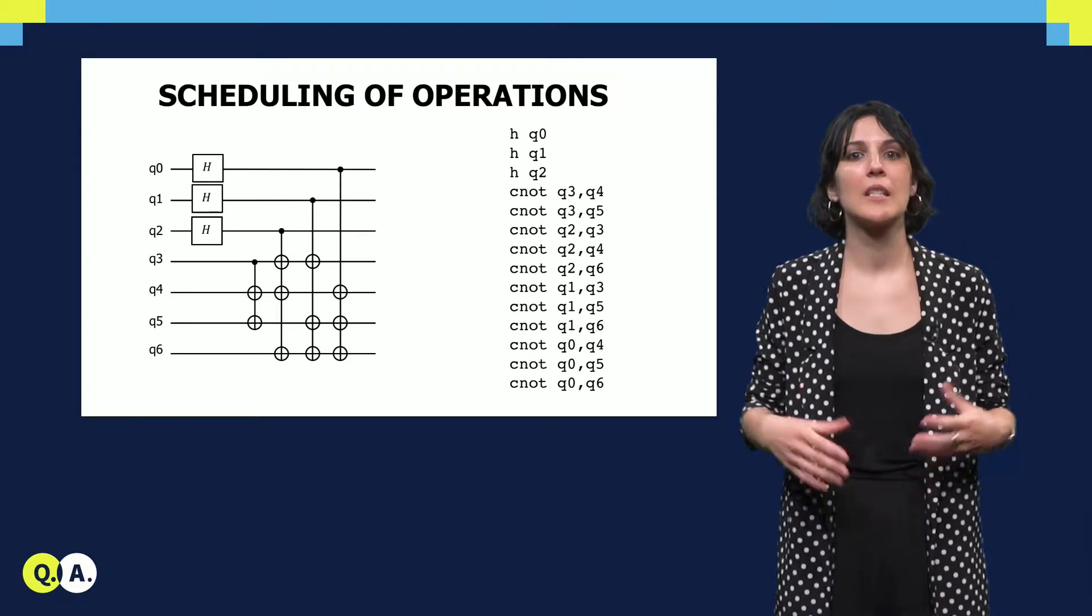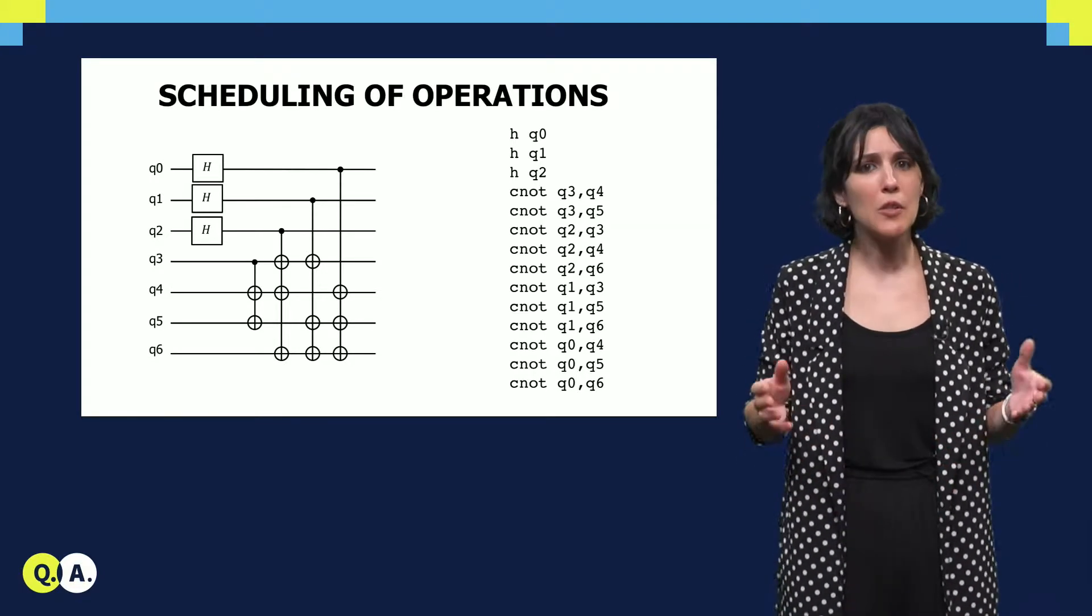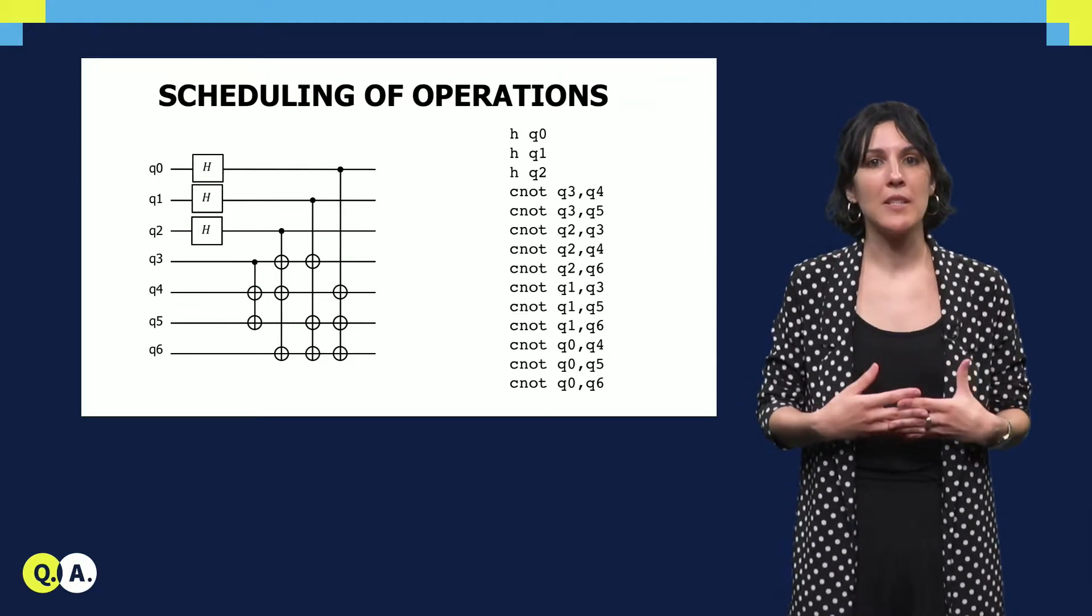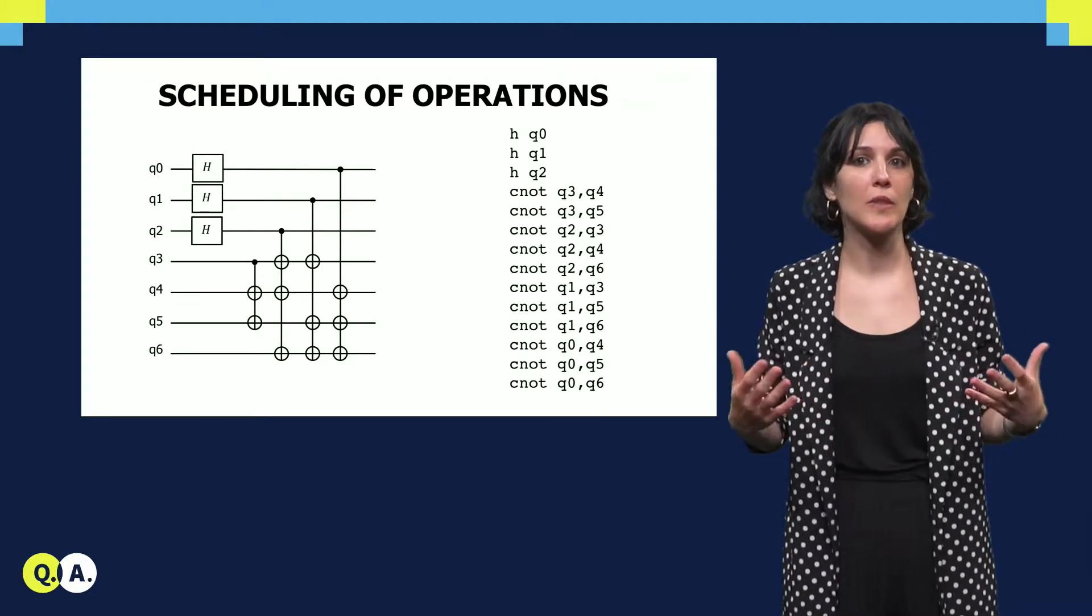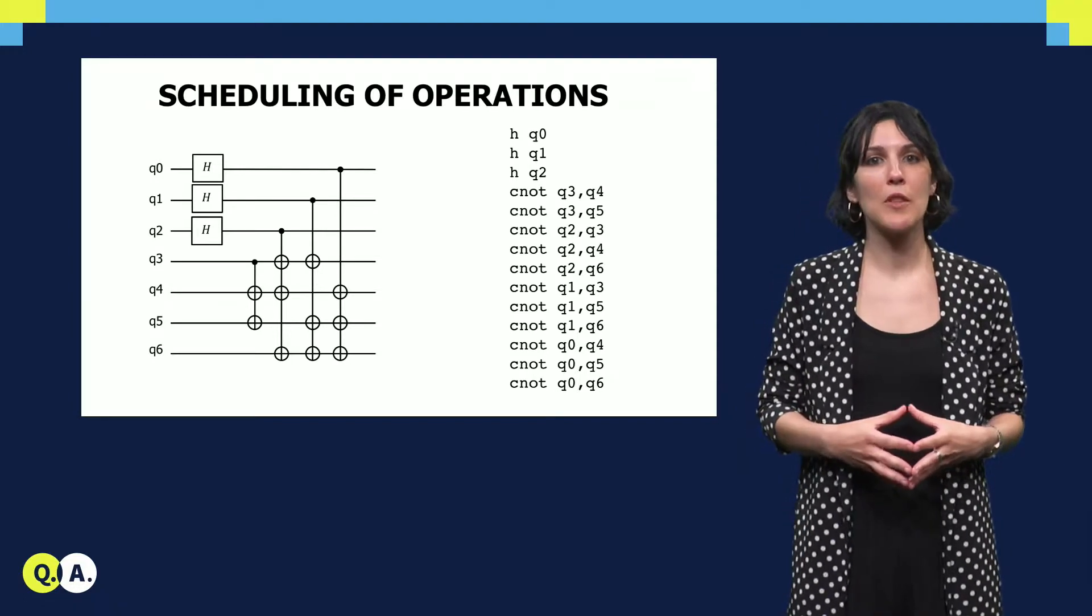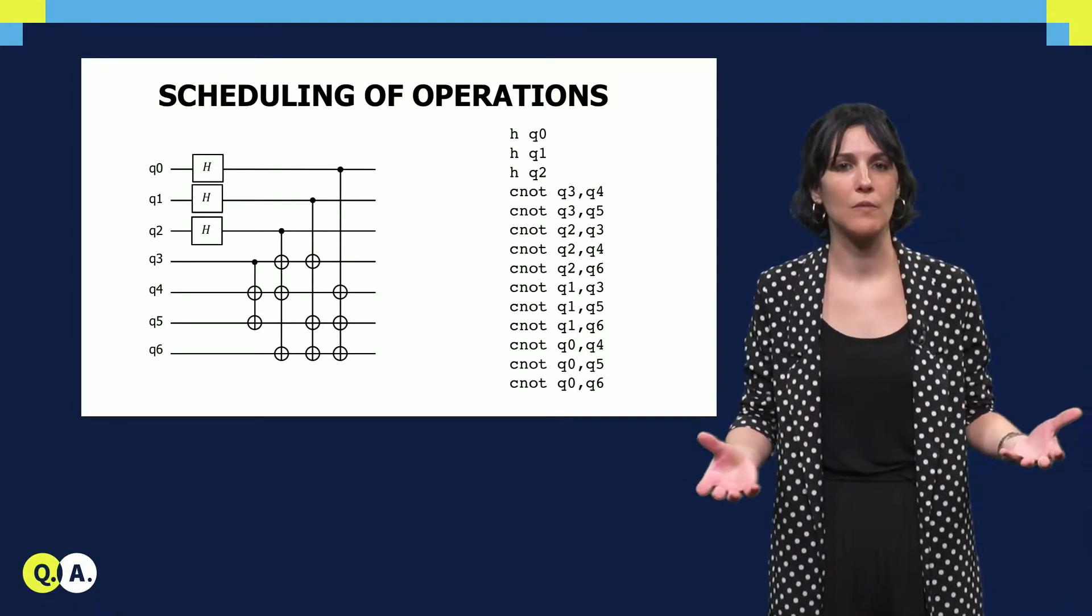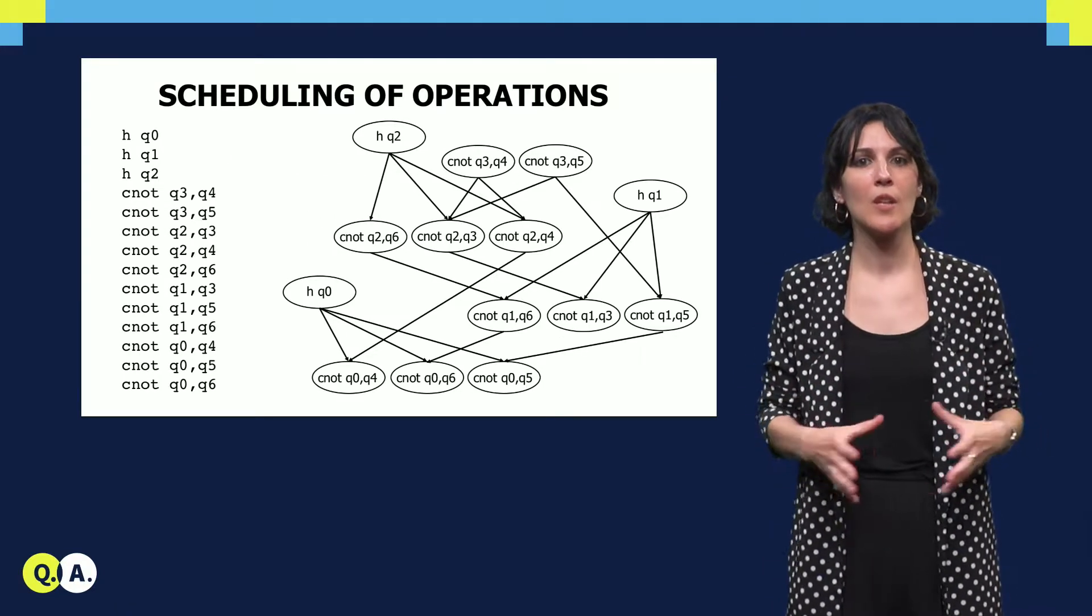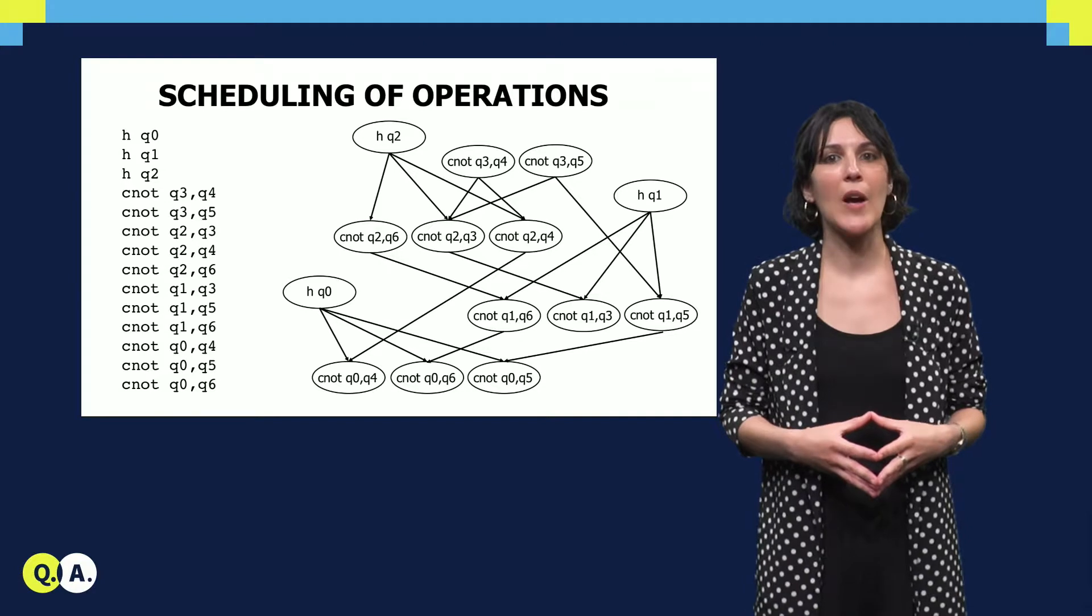Another function of the compiler is the scheduling of operations, and this is crucial when the target platform is your quantum chip. Minimizing the circuit latency or execution time of the circuit helps to reduce the potential of having errors during computation. In order to schedule the quantum operations, a quantum instruction dependency graph is built.